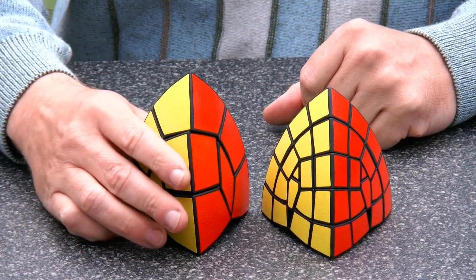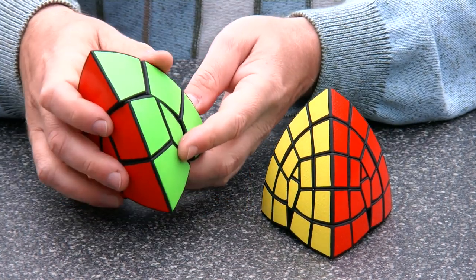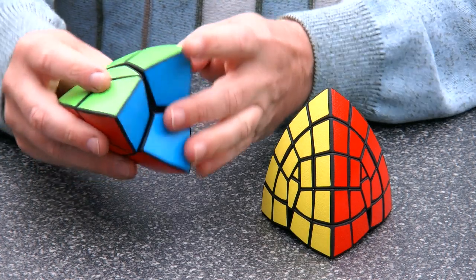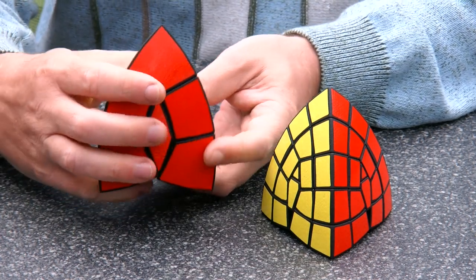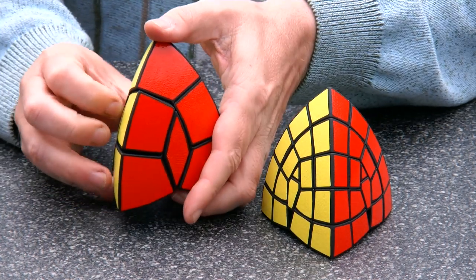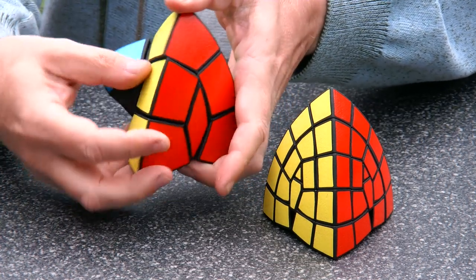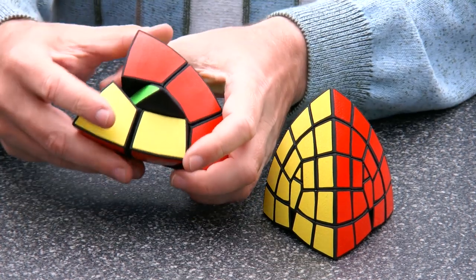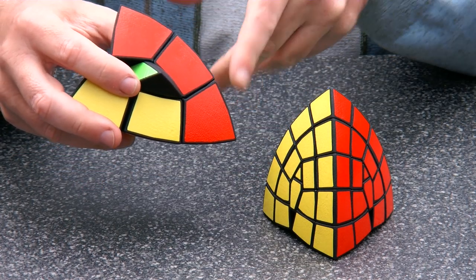And as you remember, Rocket Twist was this interesting rocket shaped puzzle where if you make moves like this one here on the back and then this one, the puzzle re-orients in space.